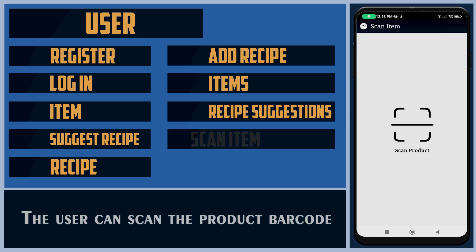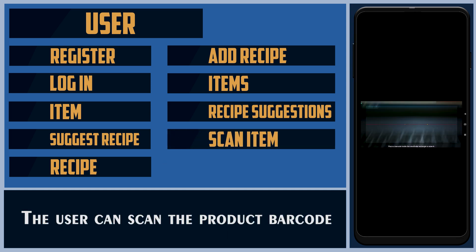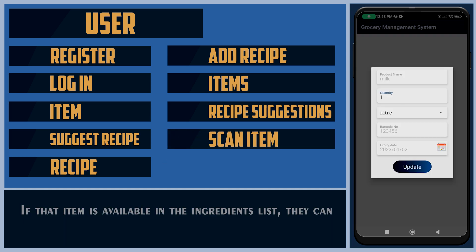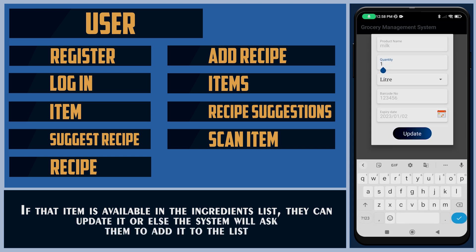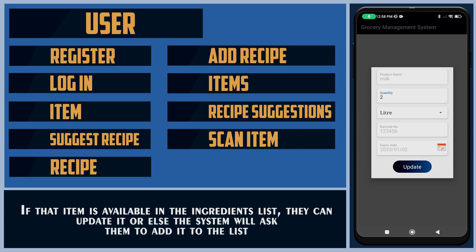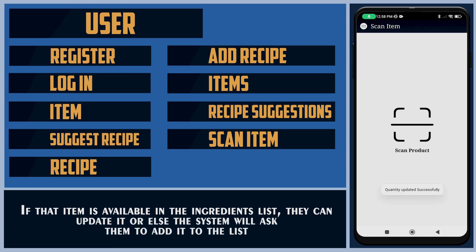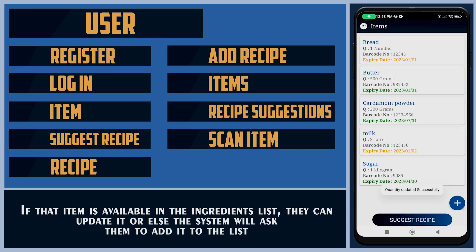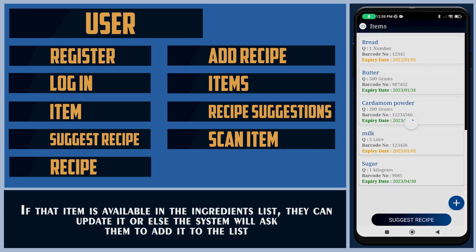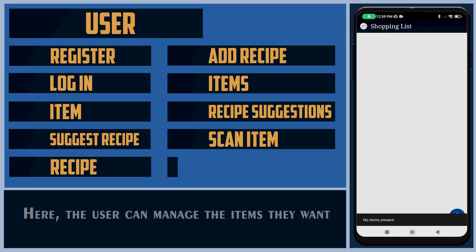The user can scan the product barcode. If that item is available in the ingredient list, they can update it; otherwise the system will ask them to add it to the list.